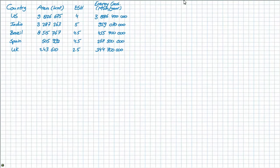Here I have already written down the data given in the assignment. You have a list of five countries with their areas, the equivalent sun hours, as well as their annual energy consumption. These sun hours per day show the equivalent hours that the sun shines with an irradiance of 1000 watts per square meter. For the US this is 4 hours per day, and for India this is 5 hours.